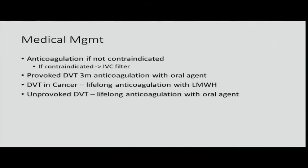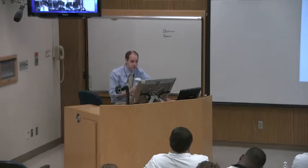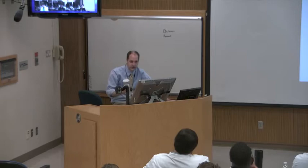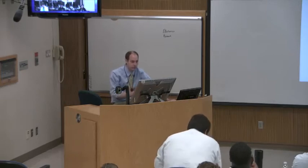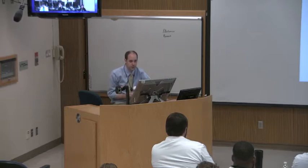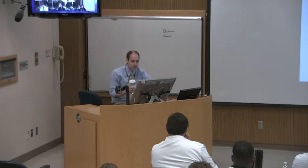Any DVT in a cancer patient should be treated with low molecular weight heparin. This includes patients with a port still being treated. Especially with Coumadin — if you're getting chemotherapy, metabolism is so unpredictable that you just can't rely on it. Low molecular weight heparin is more predictable and more readily bioavailable. You don't have to worry about whether they're vomiting from chemo or whether pancreatic cancer is preventing absorption.